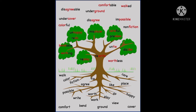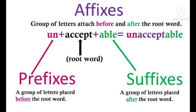Now let's see some examples for suffixes. The words given in red color are the root words, and in black color are the prefixes and suffixes. Let's start from the top, above the branches: comfortable — A-B-L-E is the suffix. The next word is walked. Next word, colorful. And within the branches we can see bendable.